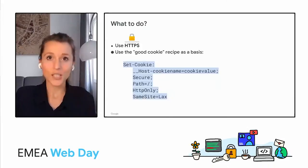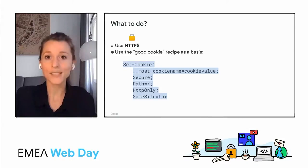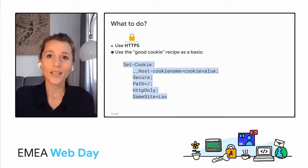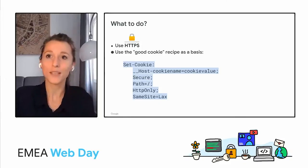So cookies are changing — how can you prepare for this? First, if you do the following, you're on a good track. First, use HTTPS everywhere. And second, make your cookies look like this when you can. This is a good first-party cookie, and you can tweak this base recipe to fit your needs. But let's take a closer look at what this recipe does exactly.